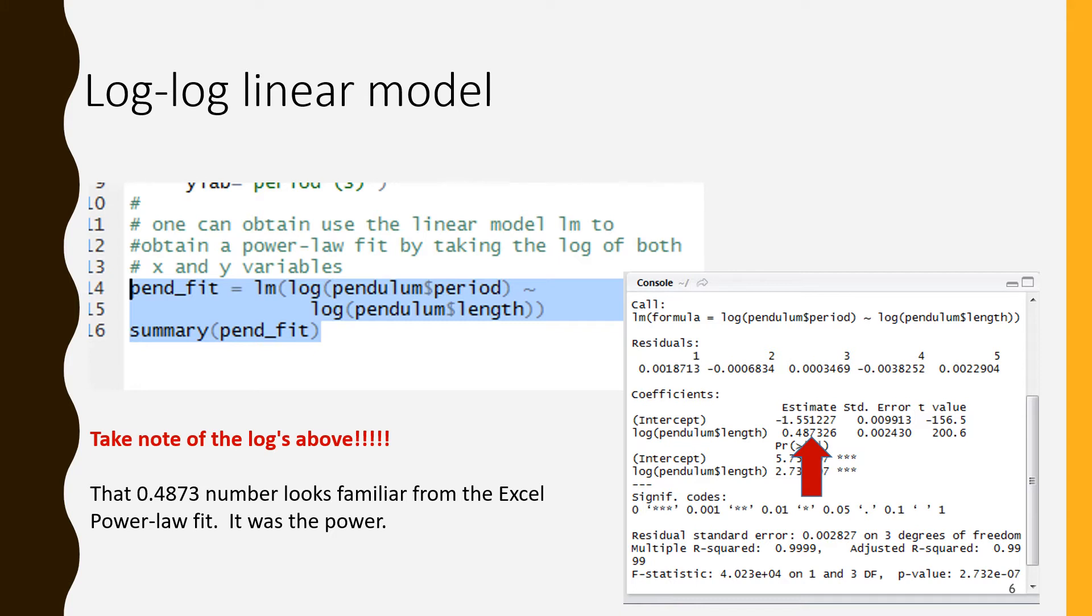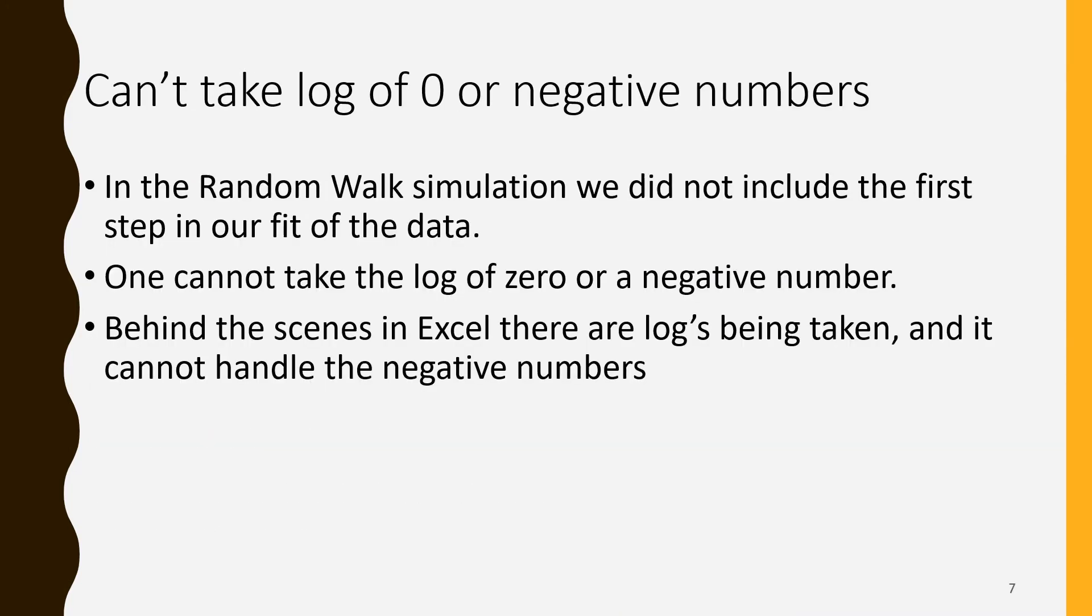We're calling this pend_fit. Then we are getting the summary of pend_fit and we're looking at it in the console. We see a number that's familiar to us if we remember the Excel from a couple of slides back, the 0.487 that was the power in the Excel power law fit. Here it is looking like the slope but it's the slope in the log log data of the linear model.